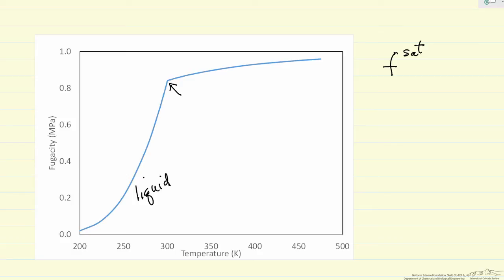At the phase change to vapor phase, the fugacity is increasing less. But notice we're again approaching ideal gas behavior—out here the fugacity should equal the pressure. The pressure is one megapascal, and we're approaching a fugacity of one megapascal as we approach ideal gas at these high temperatures.